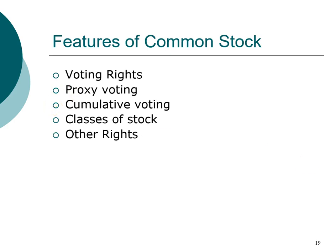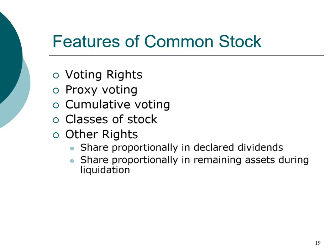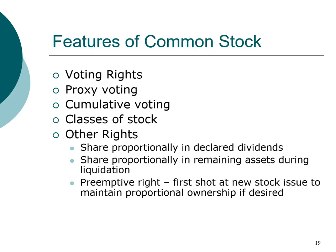Other rights that shareholders have include the right to be paid dividends if a dividend is declared, and also the right to receive any remaining value if the company goes bankrupt and declares liquidation. Importantly, many companies also have preemptive rights, which give existing shareholders the first right of refusal — the option but not the obligation to buy new shares if the company issues new stock — allowing current owners to maintain their ownership control and participate in future dividend payments.